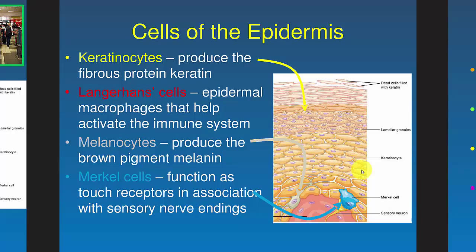Keratinocytes are the main cells that make up your skin — all the yellow cells in the figure. These figures are from OpenStax, which are creative commons. One thing I'm disappointed about is they don't show the Langerhans cells, which are immune cells that lie down in the epidermis. Any bacteria that manages to make it through will get attacked by the Langerhans cells. Melanocytes produce melanin, which makes you tan and protects you from UV rays of the sun.